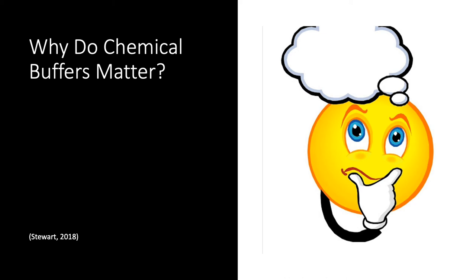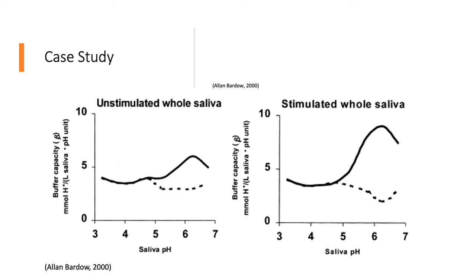Now before we conclude today's discussion over chemical buffers, let's take a look at a case study. The purpose of this case study was to determine the buffer capacity of unstimulated whole saliva (UWS) and stimulated whole saliva (SWS) at a specific pH in the interval from pH 7.5 down to pH 3.0. The contribution of the buffer system was also determined under conditions resembling those in the mouth. UWS and SWS were collected from 20 healthy volunteers. The saliva was collected under paraffin oil in order to avoid loss of carbon dioxide. The buffer capacity of UWS and SWS in samples with and without bicarbonate and carbon dioxide were measured at various pH by acid titration in a closed system at 36 degrees Celsius.